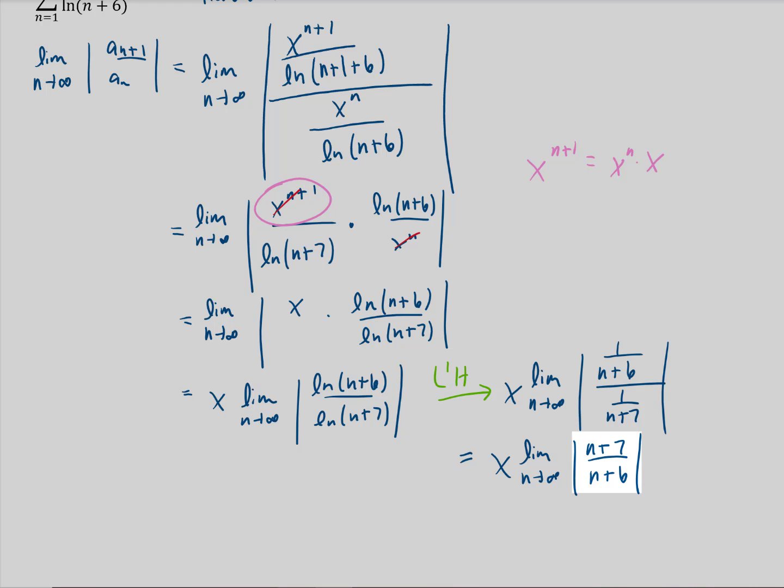Notice that the degree of the numerator and the denominator are the same. So this limit here ends up being the ratio of these leading coefficients, which is one over one. That is just one. So this whole limit is one, and we're left with x as our final limit for the ratio test.